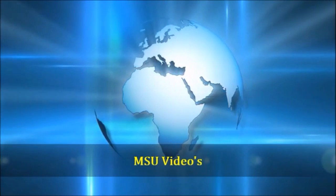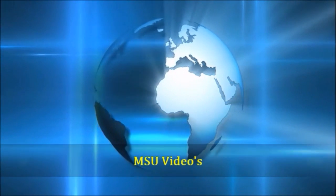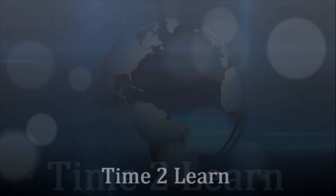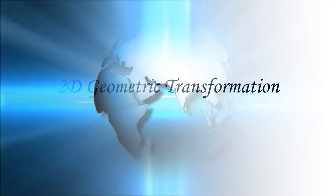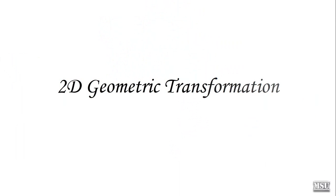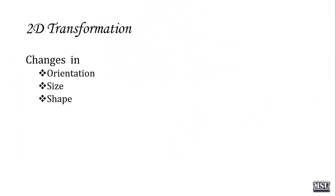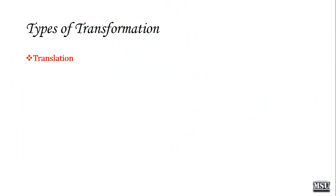Welcome to MSC videos. It's time to learn. We are discussing about 2D transformation. Changing the object's orientation, size, or shape is defined as a 2D transformation. There are translation, scaling, rotation, reflection, and shearing as types of transformation.